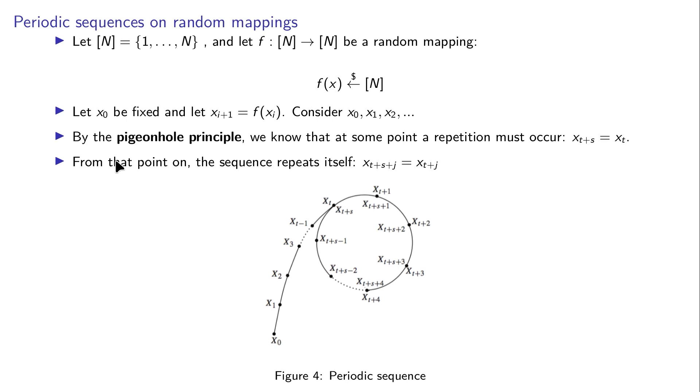By the pigeonhole principle, since this is a finite set, at some point a repetition must occur. There will be some moment where x_{t+s} equals x_t, and from that point on the sequence will repeat itself. This is depicted in a diagram showing an initial tail followed by a cycle.